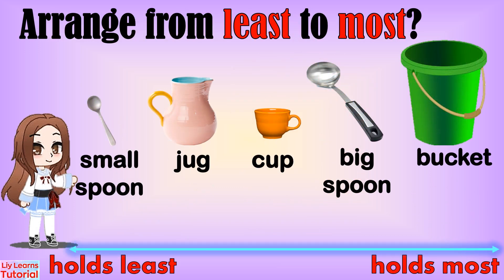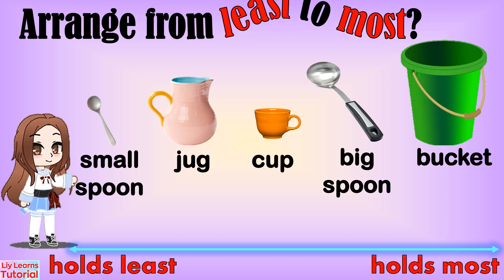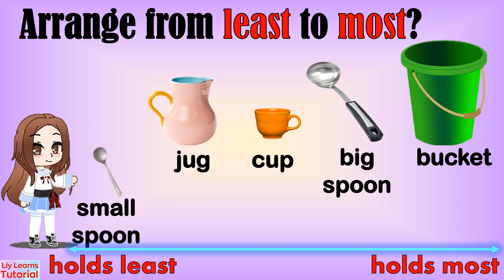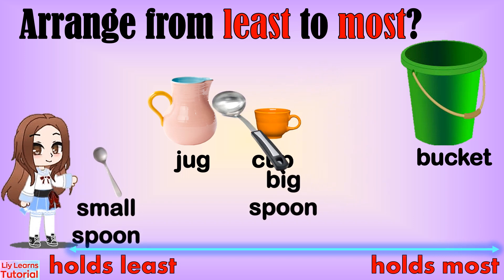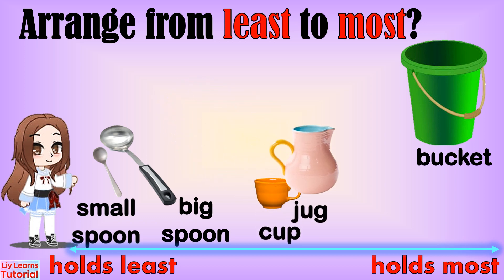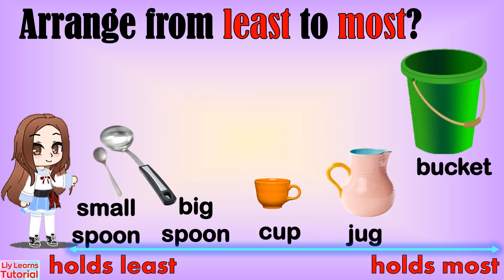Let's compare capacities by arranging the non-standard measures from the one that can hold the least to the container that can hold the most. We start from the small spoon, big spoon, cup, jug, then the bucket.